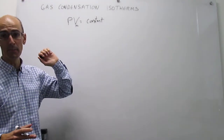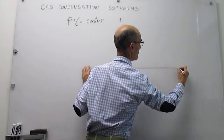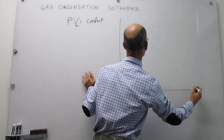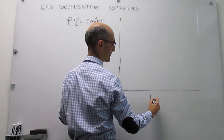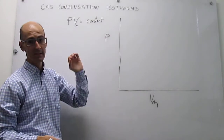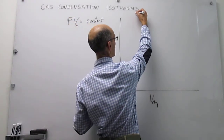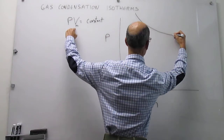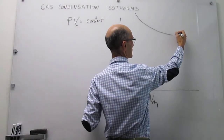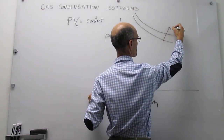We can plot pressure versus molar volume. These curves are called isotherms because the constant depends on temperature, so you get lines at different temperatures. At really high temperatures you get exactly what the ideal gas equation predicts. This would be isotherm T1, and at a lower temperature T2 — temperature increases upward along these curves.